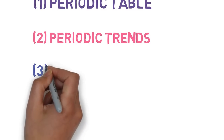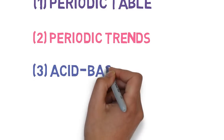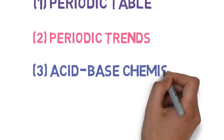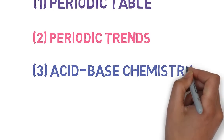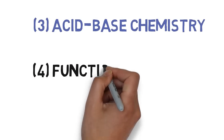Third one is acid-base chemistry in which you have Arrhenius acid-base chemistry, Lowry-Bronsted acid-base chemistry and Lewis acid-base chemistry. Fourth concept what we are going to refer to is functional groups that we have in organic chemistry.